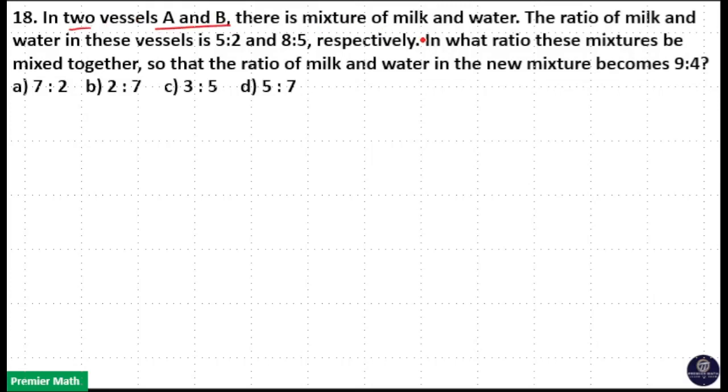In two vessels A and B, there is a mixture of milk and water. The ratio of milk and water in these vessels is 5 is to 2 and 8 is to 5 respectively. In what ratio these mixtures be mixed together so that the ratio of milk and water in the new mixture becomes 9 is to 4?